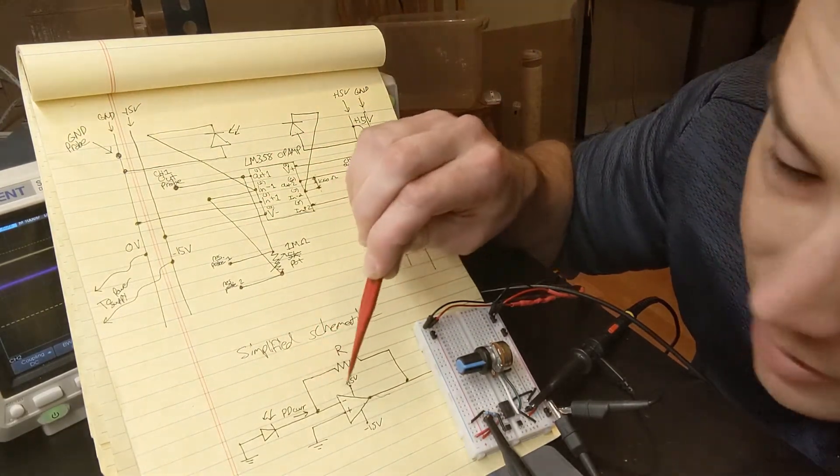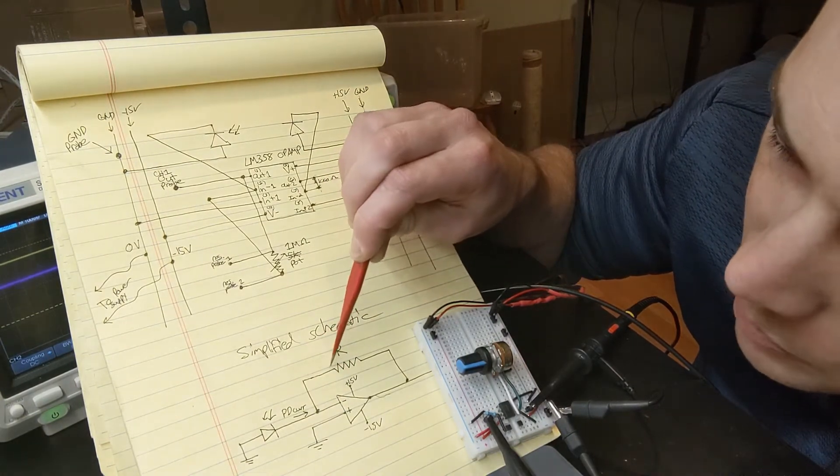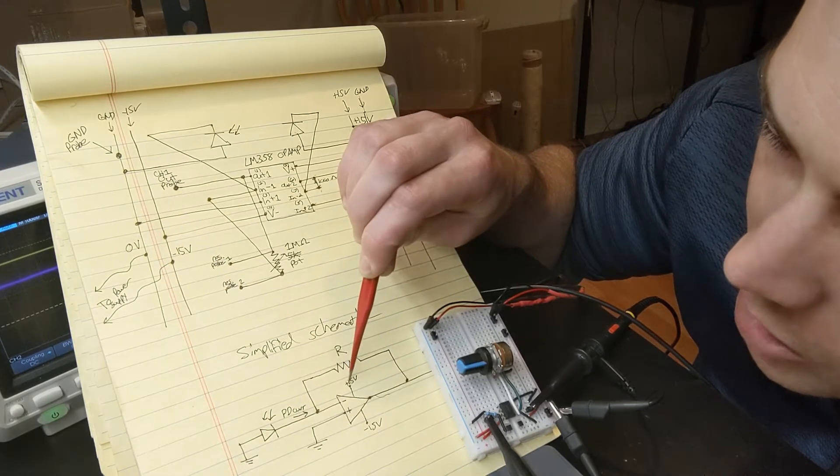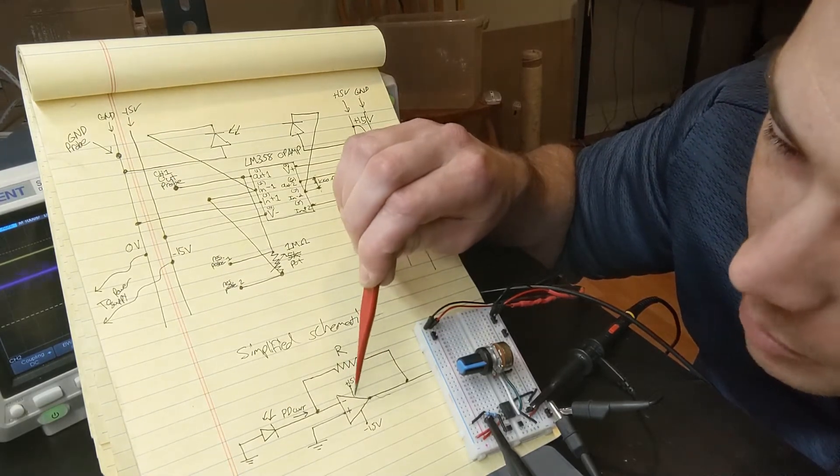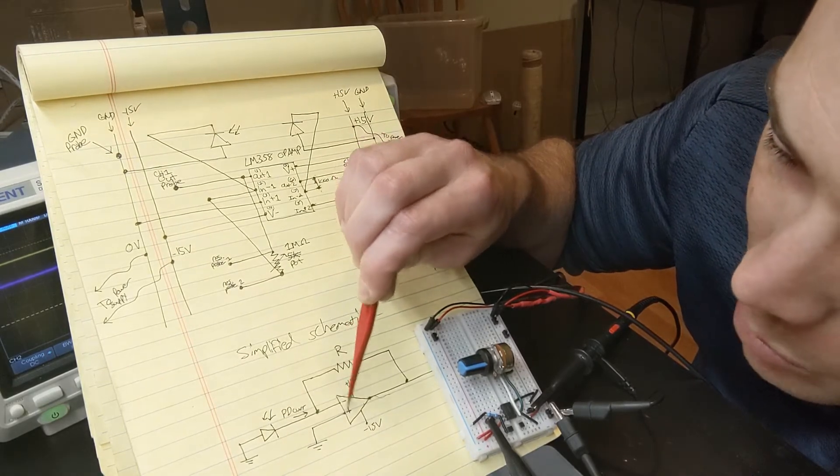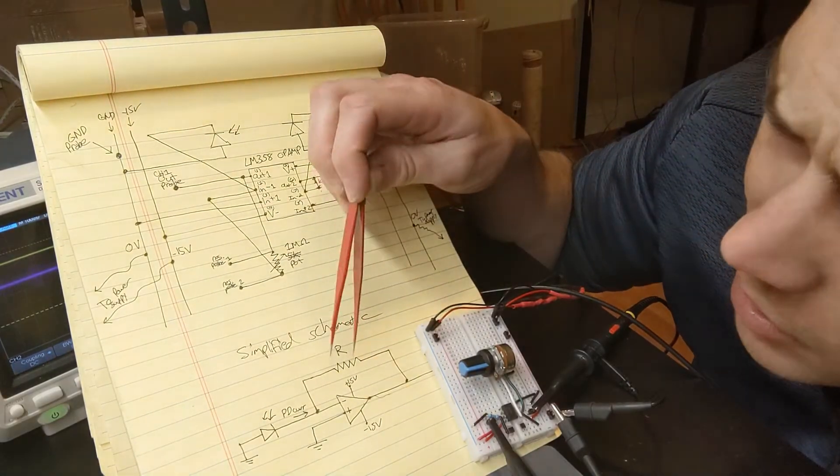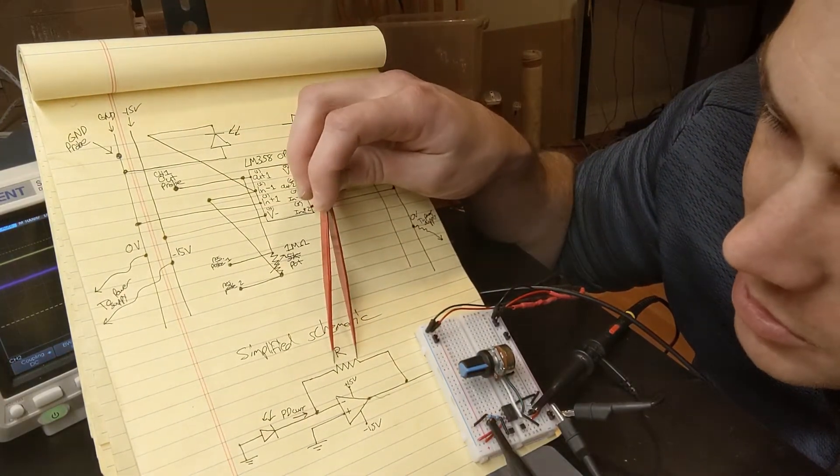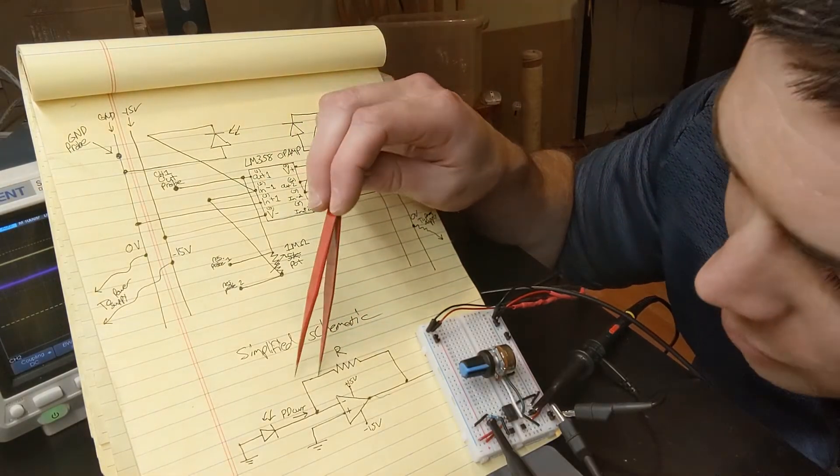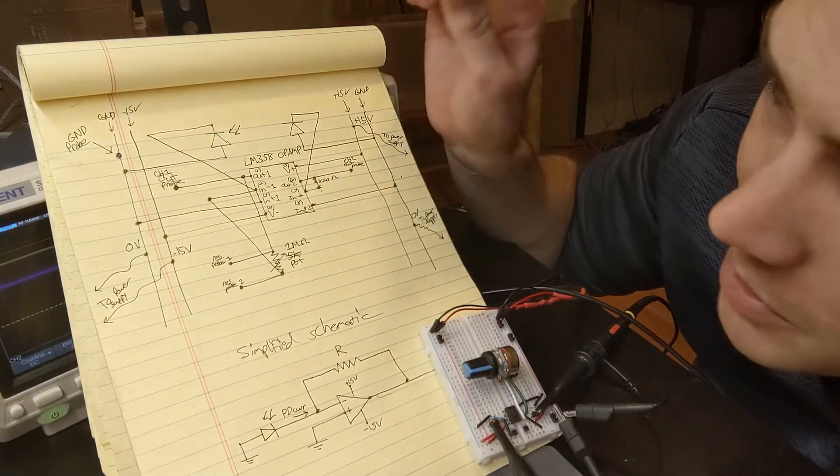And current never flows in or out of the inputs. So the current has to flow this way. And these sources here are so that current can flow out or into the op amp from this terminal. So it never flows in or out of the inputs, but it can flow in or out of the output. And so you get a voltage across this resistor. And the larger the resistor, the more the voltage difference across it's going to be. And that's why you see more gain with higher resistance.